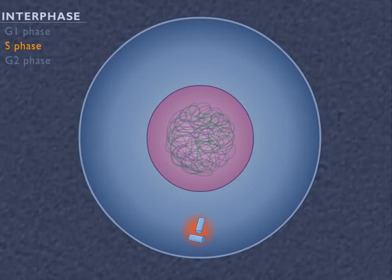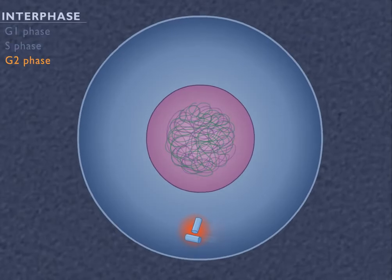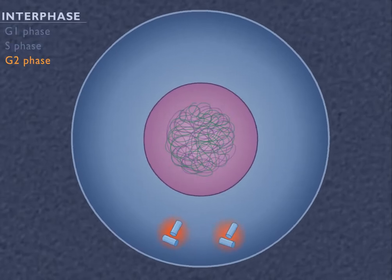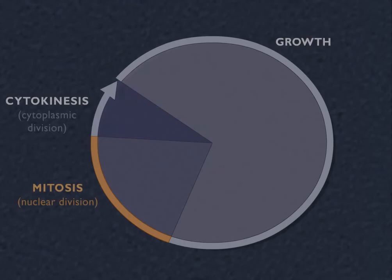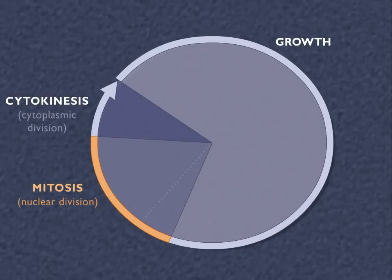During the G2 phase, the cell continues to prepare for mitosis and cell division. Mitosis, or the M phase, has four stages: prophase, metaphase, anaphase, and telophase.